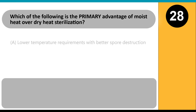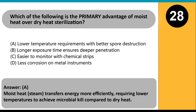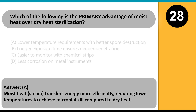Which of the following is the primary advantage of moist heat over dry heat sterilization? A. Lower temperature requirements with better spore destruction. B. Longer exposure time ensures deeper penetration. C. Easier to monitor with chemical strips. D. Less corrosion on metal instruments. Answer: A. Moist heat (steam) transfers energy more efficiently, requiring lower temperatures to achieve microbial kill compared to dry heat.